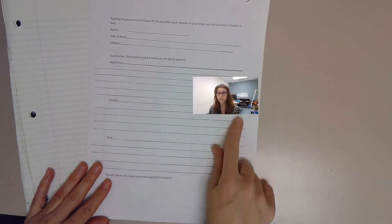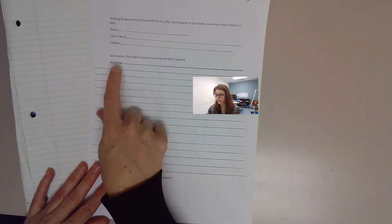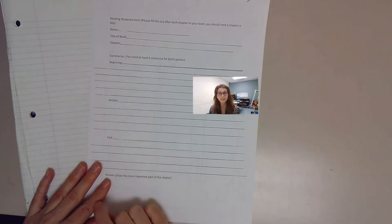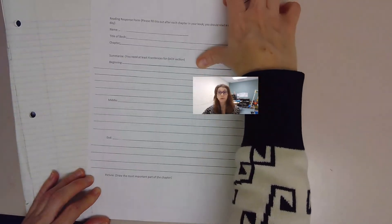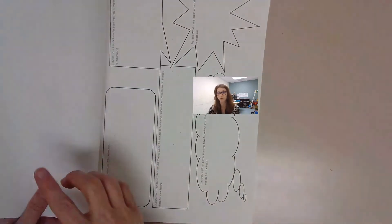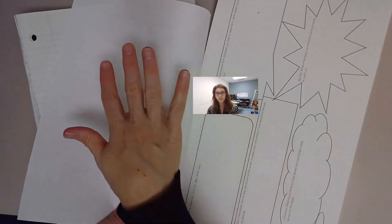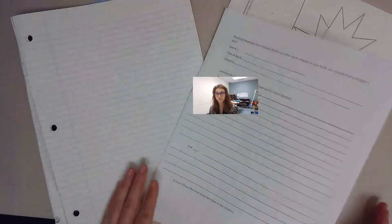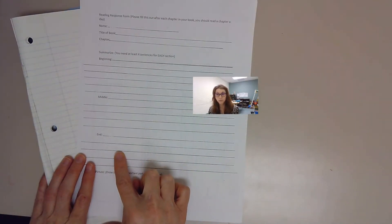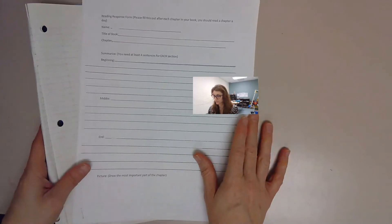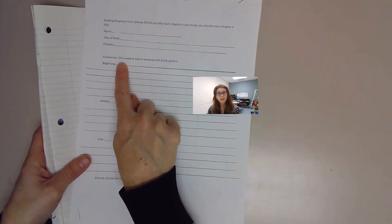Out of your reading response forms, this one is a beginning, middle, and end summary of what happened in the chapter. It says picture, draw the most important part of the chapter. Please include that as well. You can just draw it on the back of the sheet.